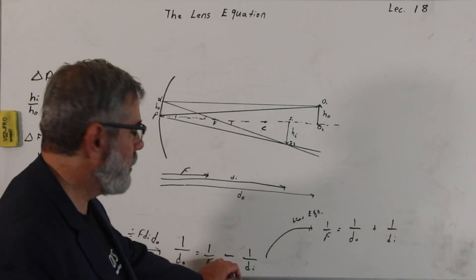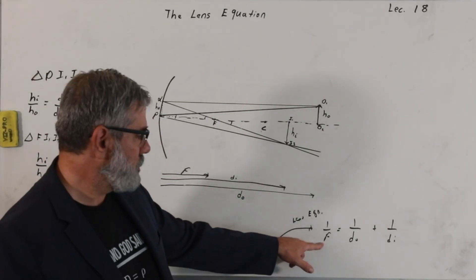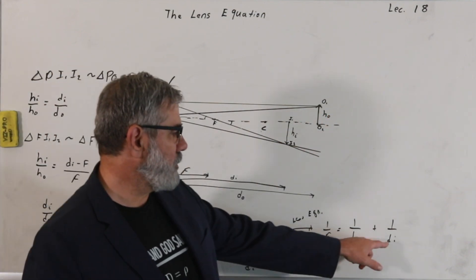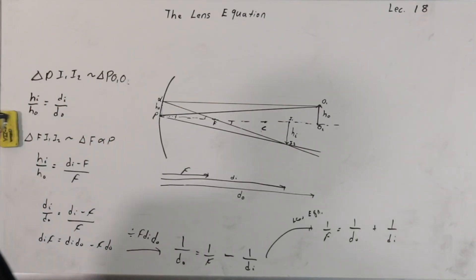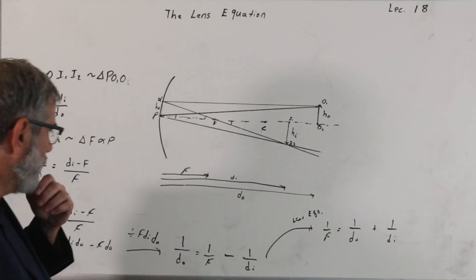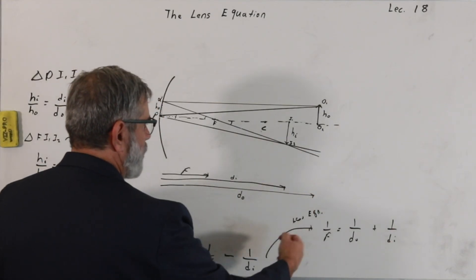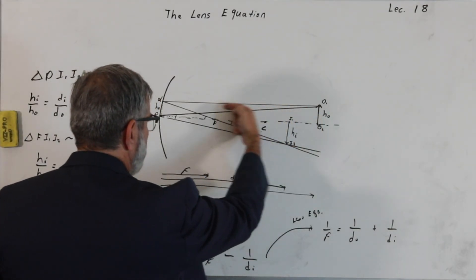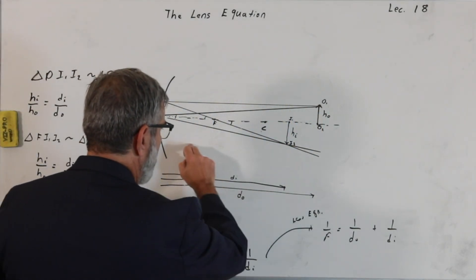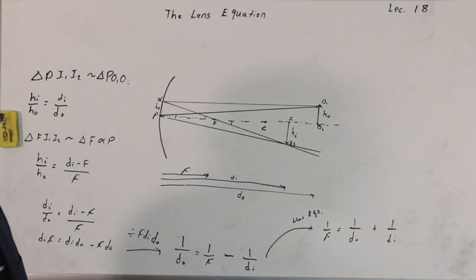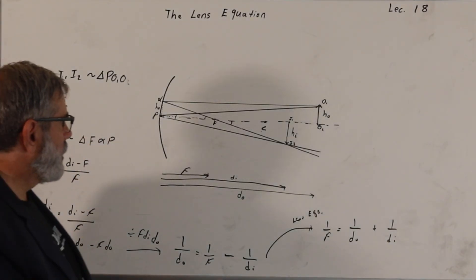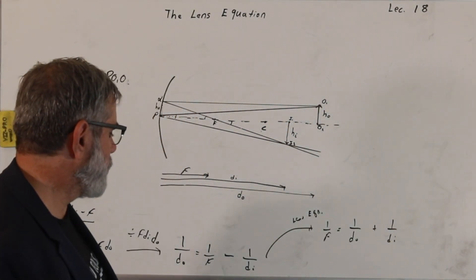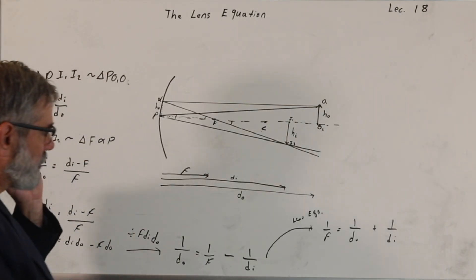Typically, you'll be given the focal length of the lens, or you'll know it, along with the object distance from the spherical mirror, and you can use that to find the image distance. I should point out there's a sign convention: you have to consider the positive x direction to be in the direction of incident rays. In this picture, do and di would both be negative numbers, and positive numbers would be on the other side. Above the optic axis is positive, below is negative.